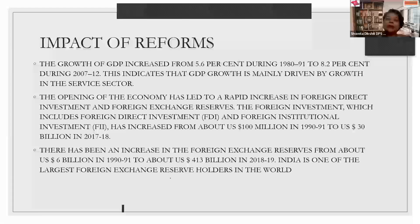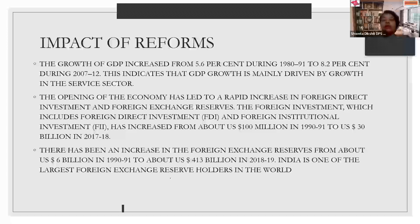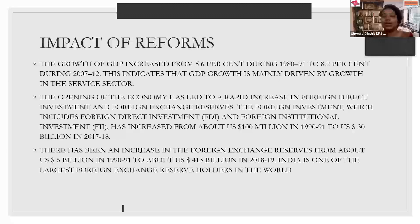We have so far discussed liberalization and its policies, privatization, and globalization — along with outsourcing and World Trade Organization. A very important analytical question is: how did these reforms make an impact on the Indian economy? Starting with positives: first, our GDP increased from a 5.6% average to 8.2% — a great jump, largely due to investments made in the country and majorly due to the growth of the service sector in India.